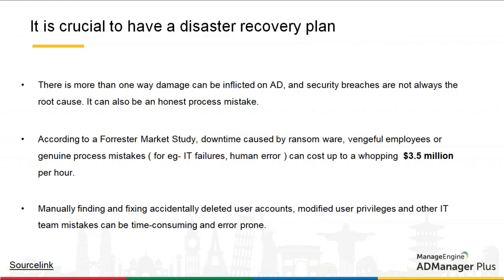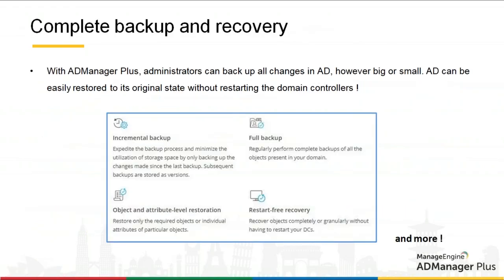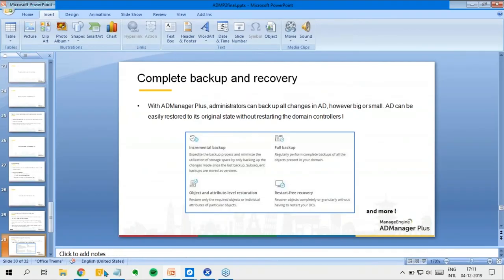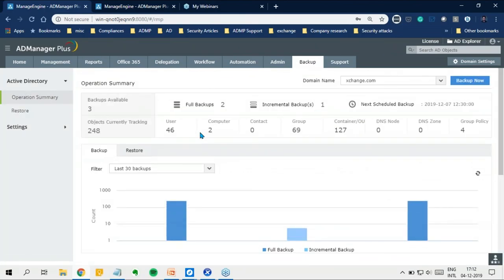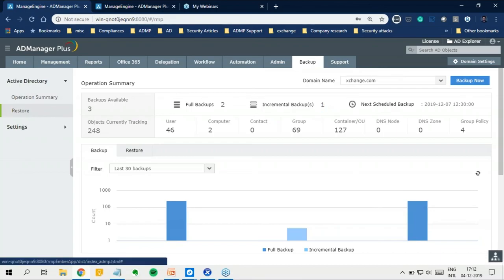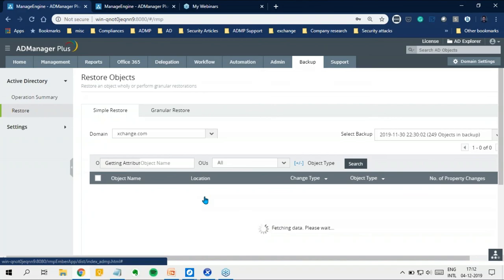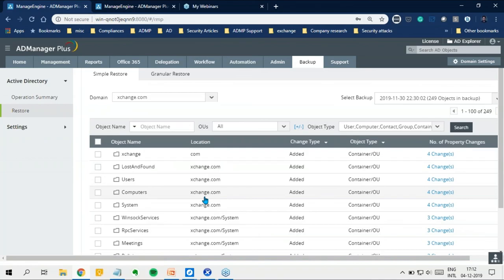There is more than one way damage can be inflicted on Active Directory — it's not always an attacker, it can also be an honest process mistake. According to a Forrester market study, downtime caused by ransomware, vengeful employees, or genuine IT process mistakes can cost up to $3.5 million per hour. Manually finding and fixing deleted user accounts, groups, or OUs is very cumbersome and error-prone. AD Manager Plus offers complete backup and recovery — administrators can back up Active Directory objects including users, computers, contacts, groups, and DNS nodes with attribute-level backup, complete or incremental backups, and restart-free backup and restore.